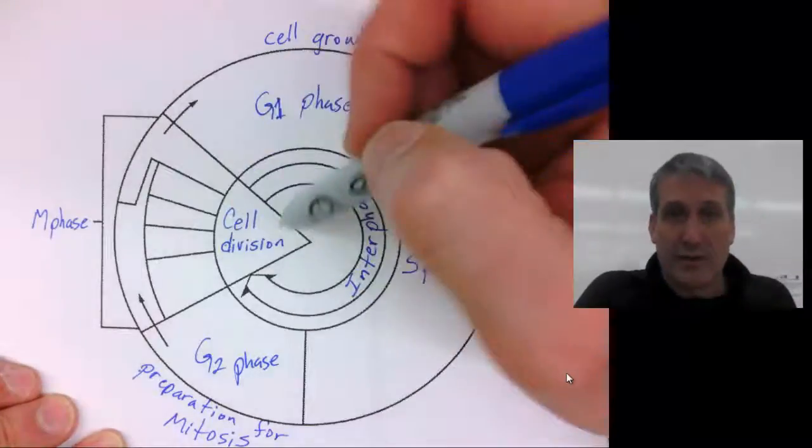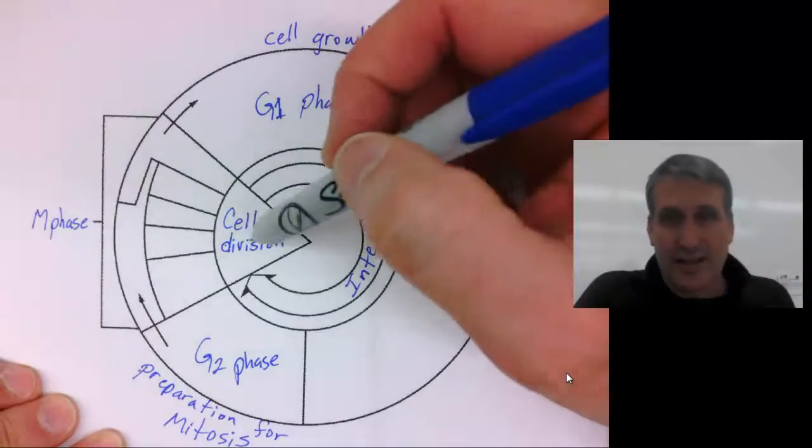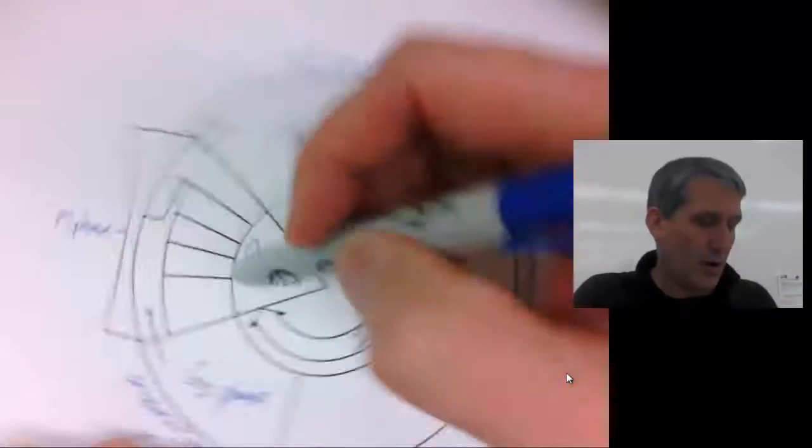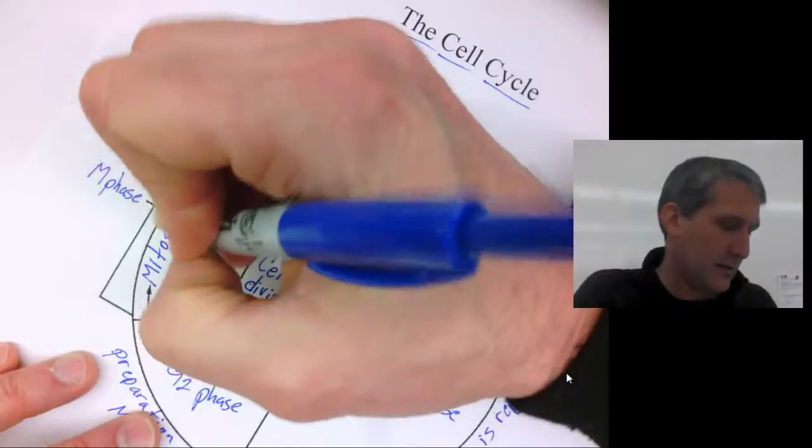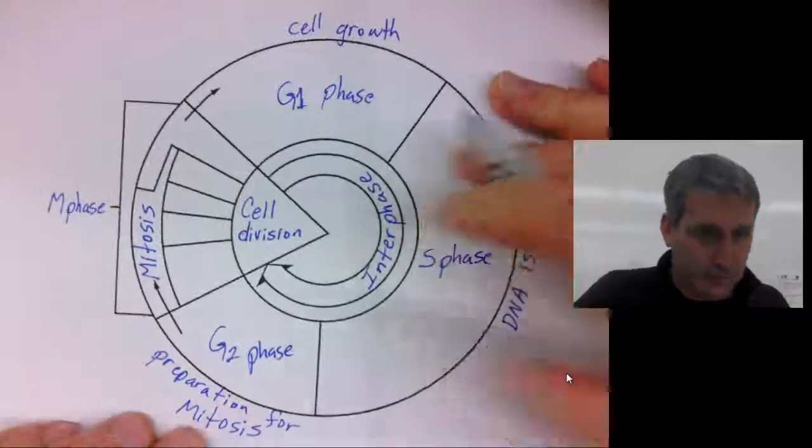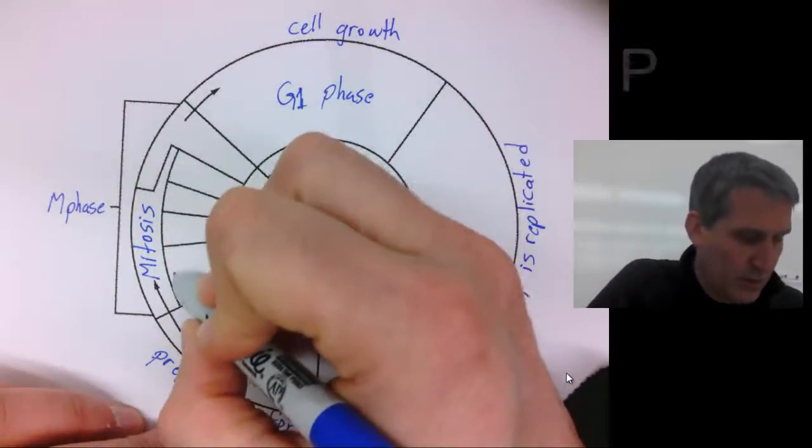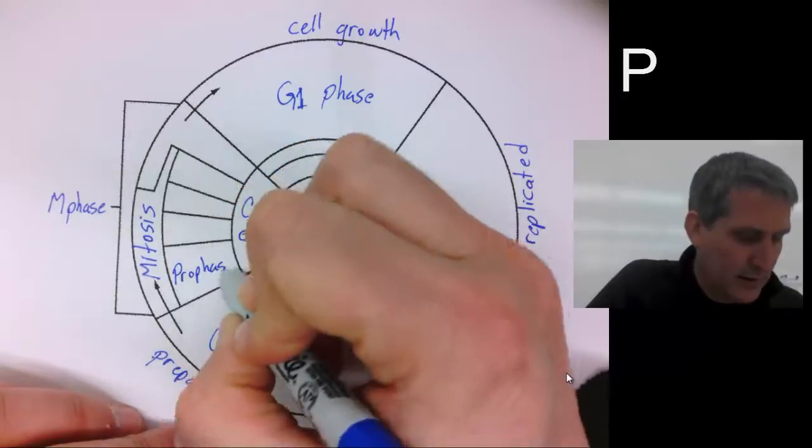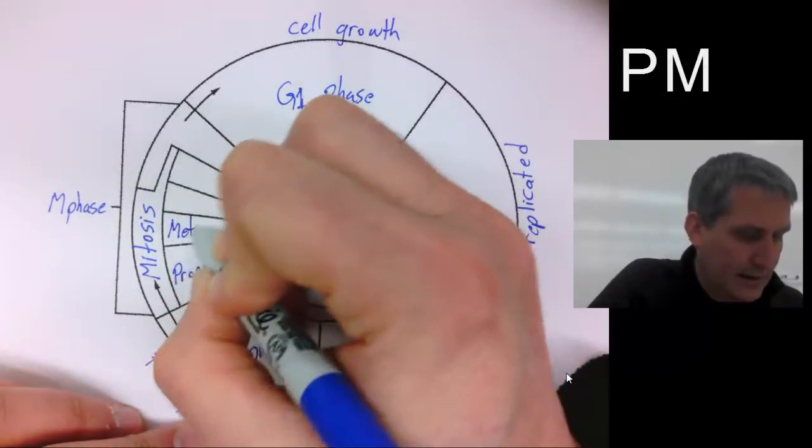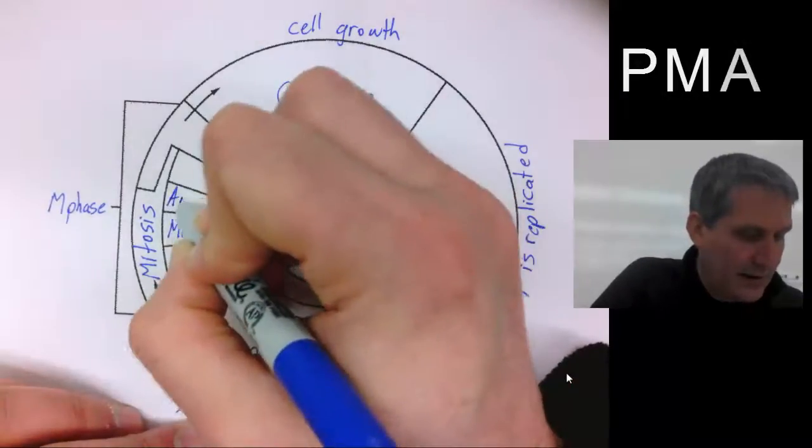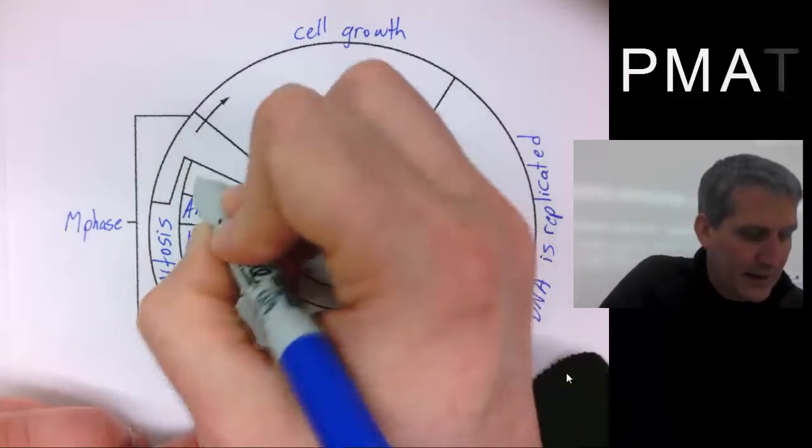Then, when the cell actually goes into cell division, the first part is called mitosis, which includes prophase, metaphase, anaphase, and telophase.